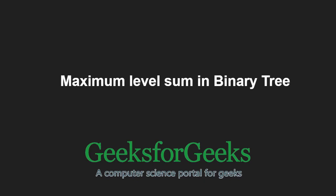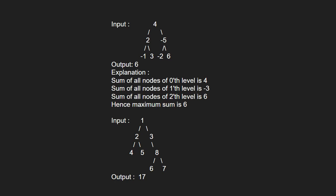First, let us take an example. In the first input, sum of all nodes at the 0th level is 4. Sum of nodes at the first level is -3. Sum of nodes at the second level is 6. Hence the maximum sum will be 6.